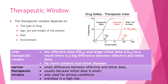There are a number of factors that affect the therapeutic window: the type of drug, age, sex, weight of the patient, their diet, and the environment. Because drugs are so susceptible to the way our bodies behave, the therapeutic window is also very susceptible to these variables.